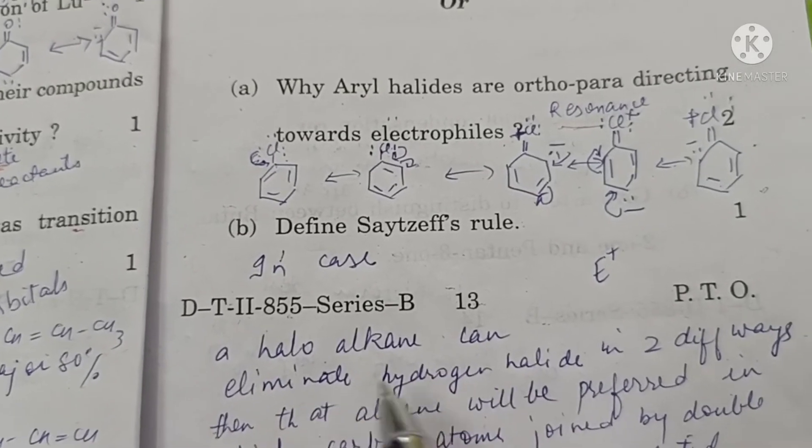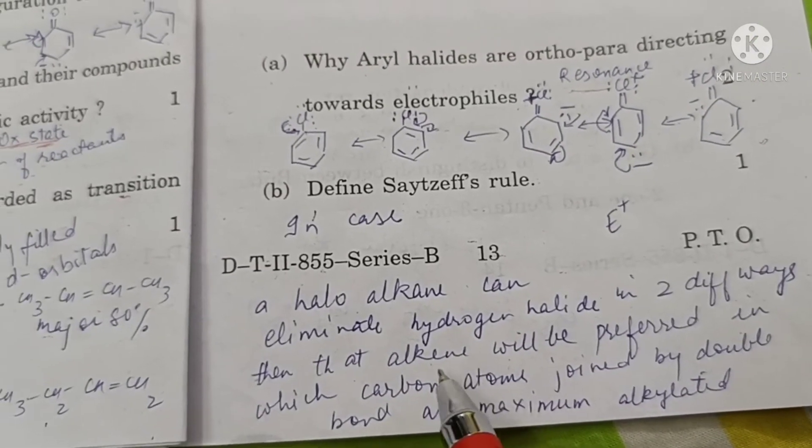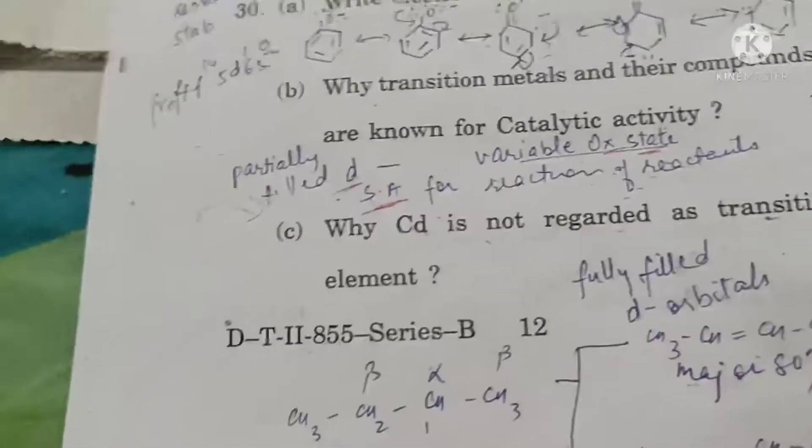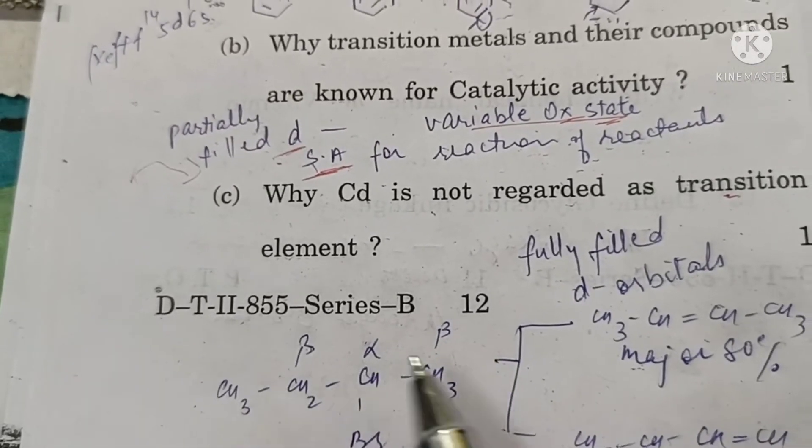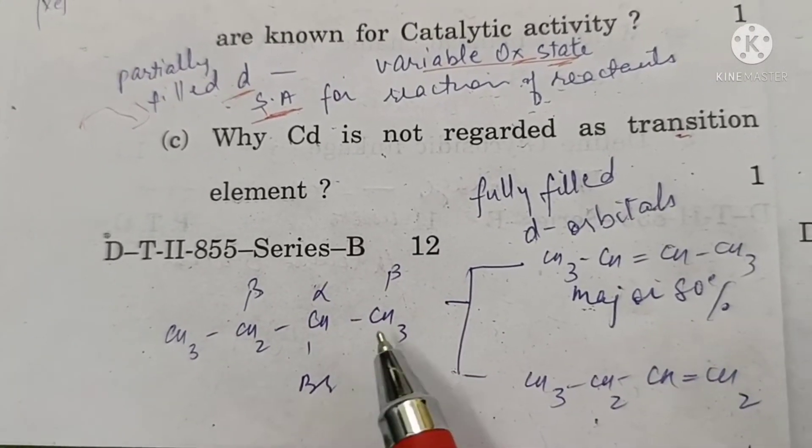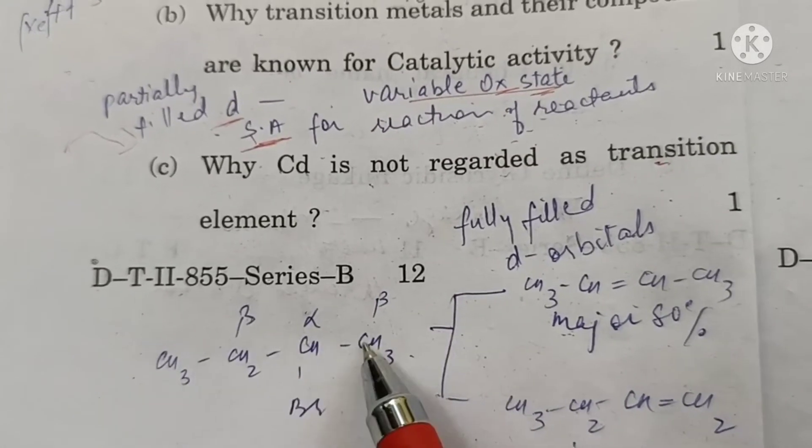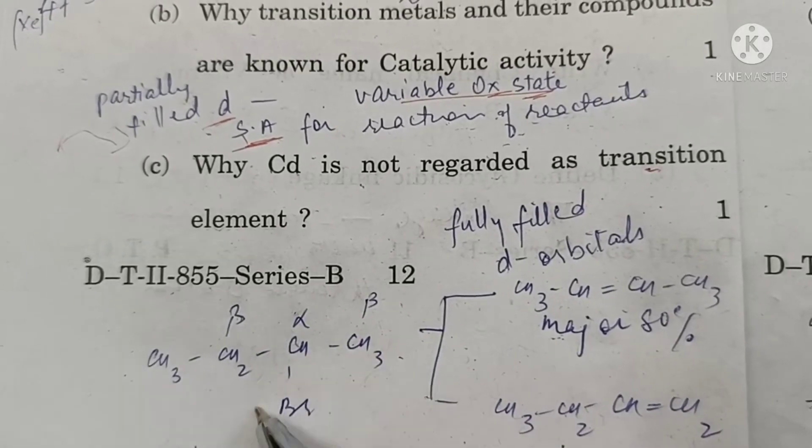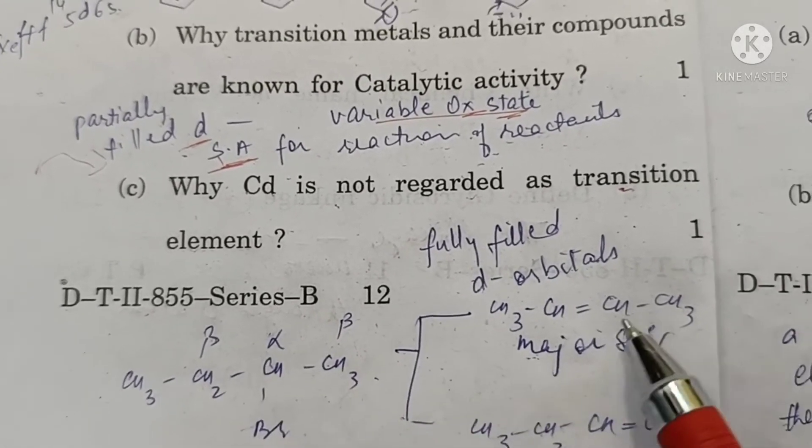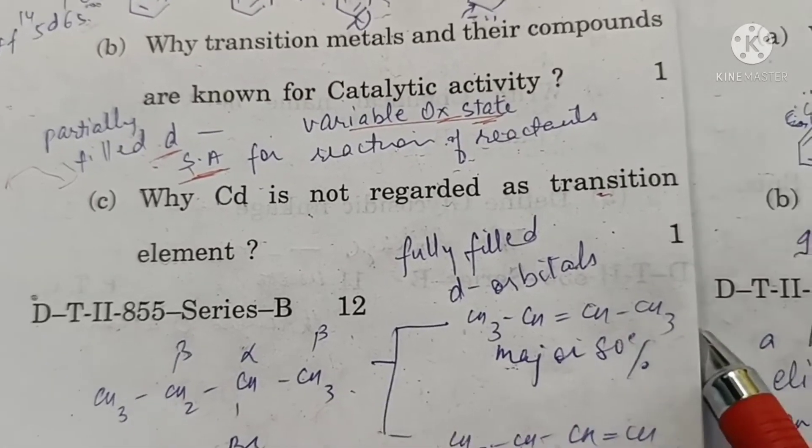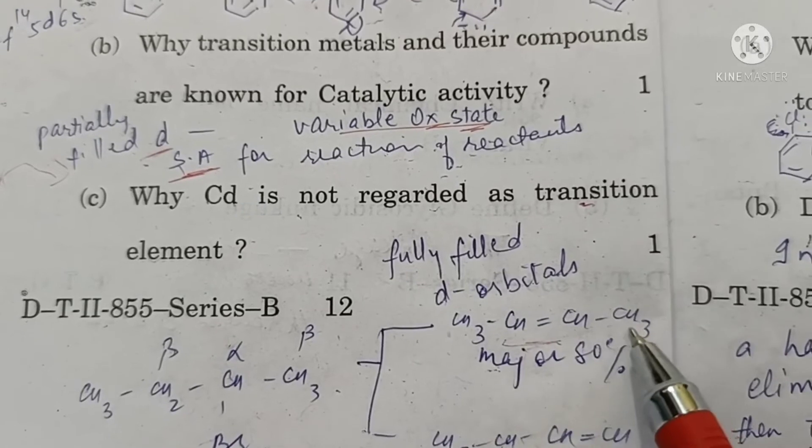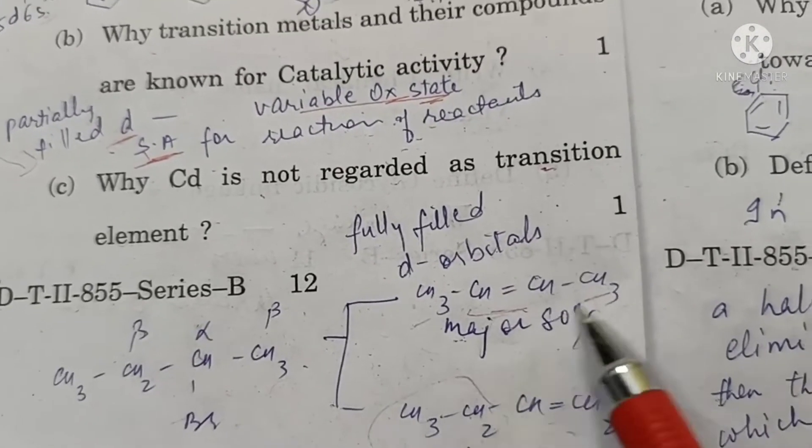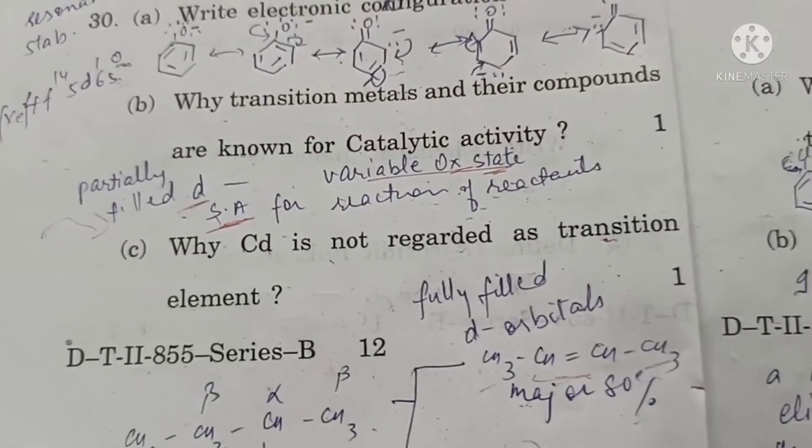Define Saytzeff's rule. In case a halo alkane can eliminate hydrogen and halide in two different ways, then that alkene will be preferred in which carbon atoms joined by double bond are maximum alkylated. For example, there are two beta positions. In this bromo alkane, when elimination occurs by reaction with alcoholic KOH, this HBr or this HBr can be eliminated. This is eliminated in major amounts. This product is major because here the double bond is substituted by two alkyl groups versus only one alkyl group. So this is formed in major amounts. This is Saytzeff's rule.